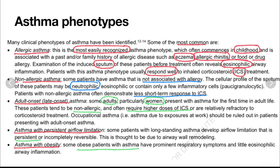The second category is non-allergic asthma. Some patients have asthma not associated with allergy. The cellular profile will contain neutrophils — very important — not a lot of eosinophils, but neutrophils, eosinophils, and a few other inflammatory cells. Patients with non-allergic asthma often demonstrate less short-term response to ICS, so they will not respond well to ICS.